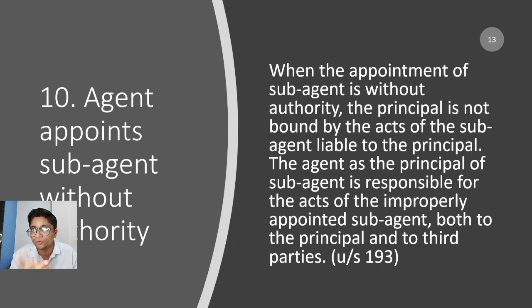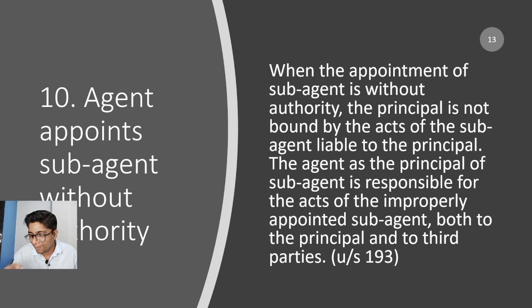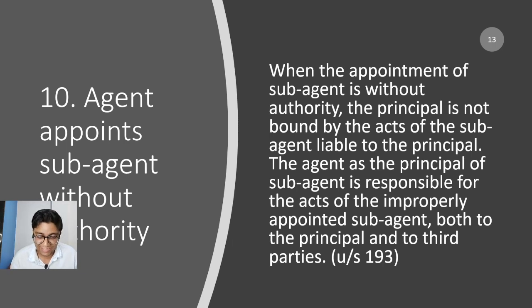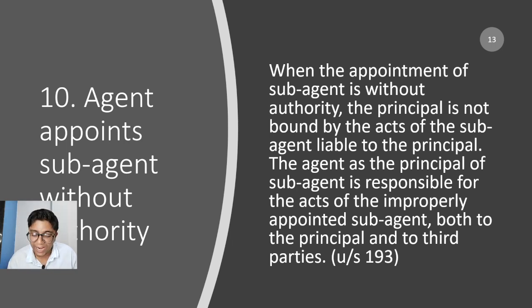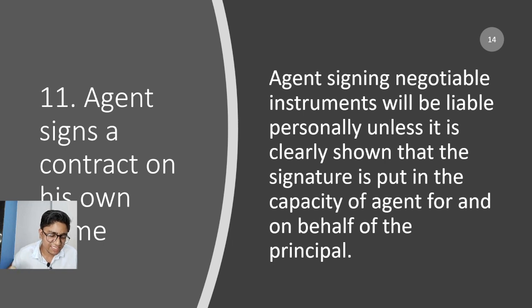Next, when an agent appoints a sub-agent without authority. If you appointed me as agent and I appoint a sub-agent without your permission, then whatever the sub-agent does is on my behalf, not yours. I will be responsible to third parties, and I am also liable to you for appointing the sub-agent without permission. Under Section 238, when the appointment of a sub-agent is without authority, the principal is not bound by the sub-agent's acts, and the agent is responsible both to the principal and to third parties.